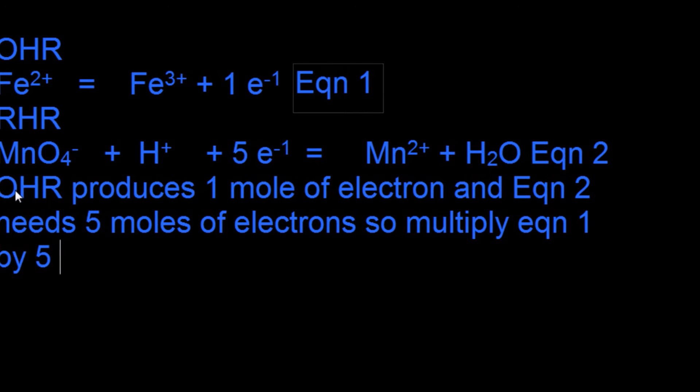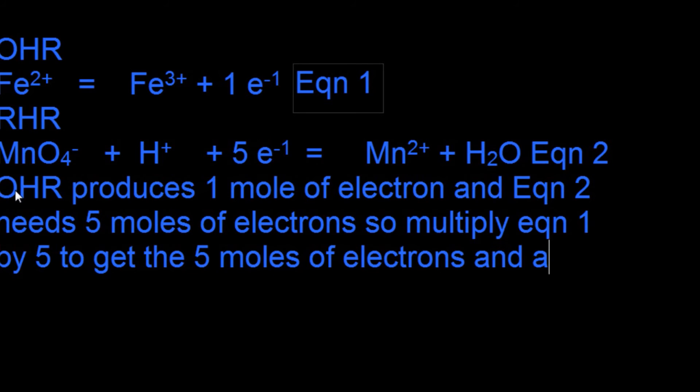Now in this reaction, the first equation, equation 1, produces an electron. The second equation consumes the electron and we need five moles of electrons. Therefore, multiplying equation 1 with 5 gives us five moles of electrons, therefore makes it easy to balance.